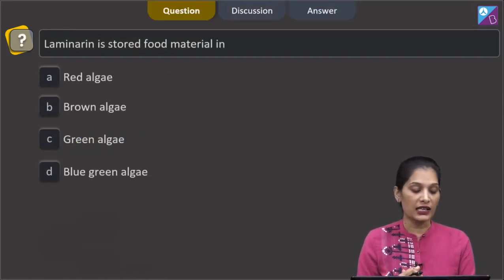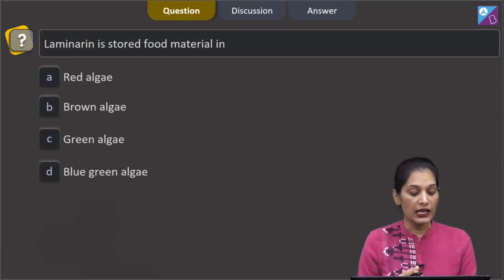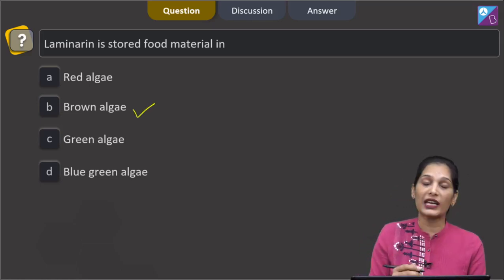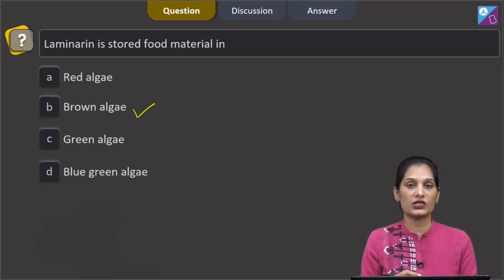Let us move to the next question. This question is asking that laminarin is stored food material in. Laminarin or mannitol, it is the stored food material in brown algae. In red algae, it is the floridine starch. In green algae, it is the starch. In blue green algae,